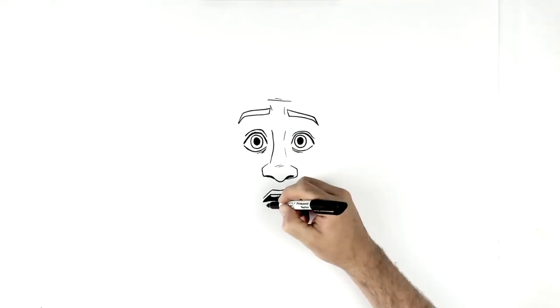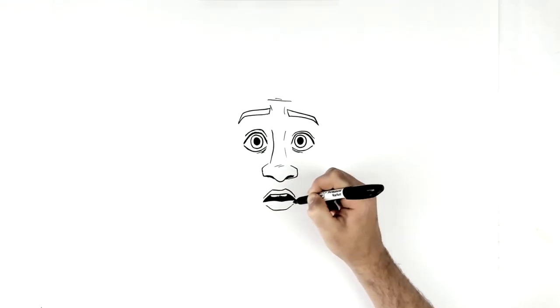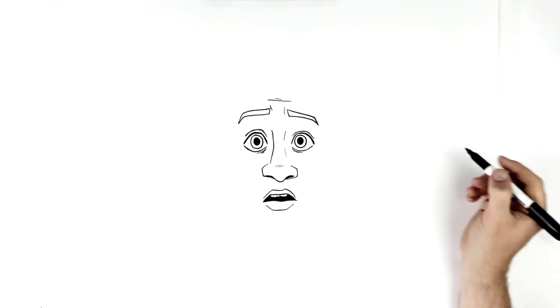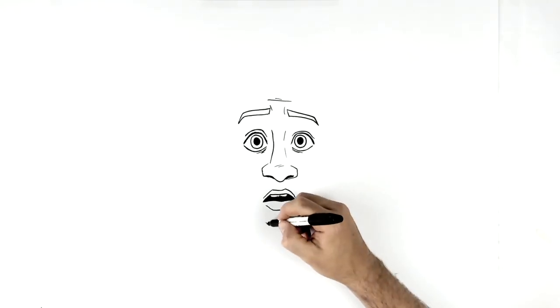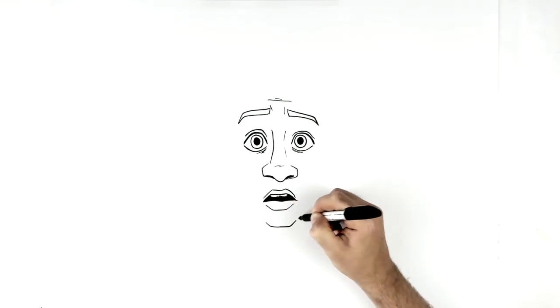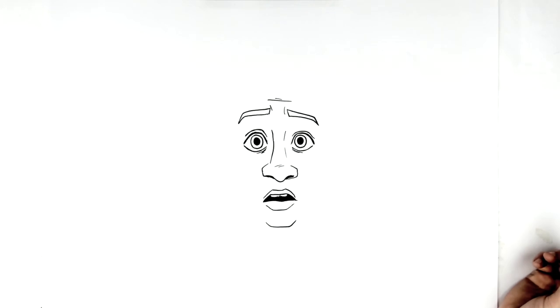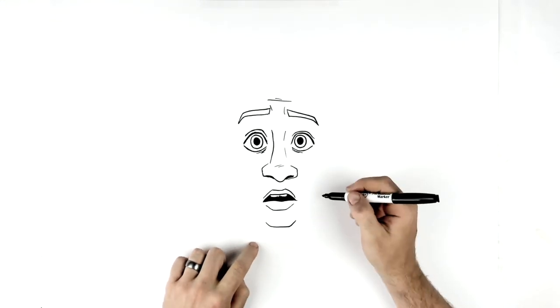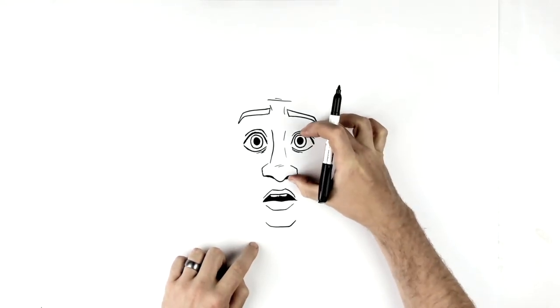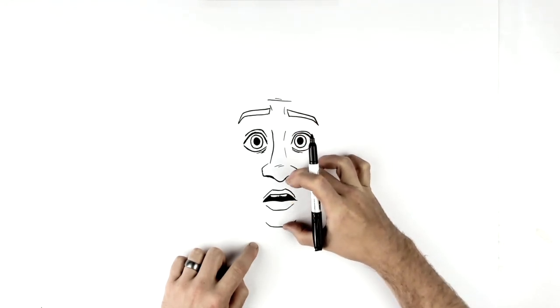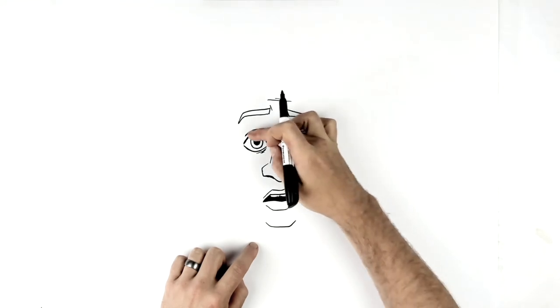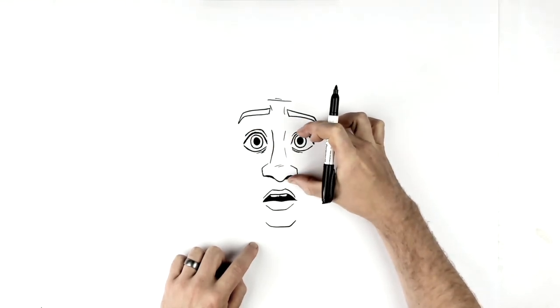And then bottom lip, like so. Then chin, pretty square chin just there. So proportion-wise, his eyelash line to the bottom of his nose is about the same as bottom of his nose to his chin.